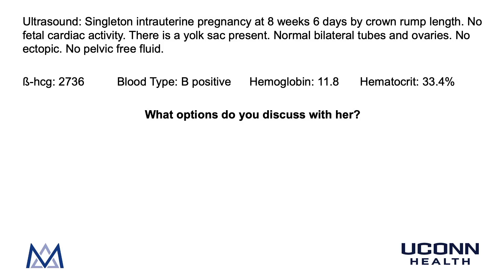ZC's transvaginal pelvic ultrasound reveals a singleton intrauterine pregnancy at 8 weeks and 6 days by crown-rump length. There is no fetal cardiac activity. There is a yolk sac present. She has normal appearing bilateral fallopian tubes and ovaries, no ectopic pregnancy, and no pelvic free fluid. Her beta-HCG level is 2,736. Her blood type is B positive. Her hemoglobin is 11.8 and her hematocrit is 33.4%. What options do you discuss with her?